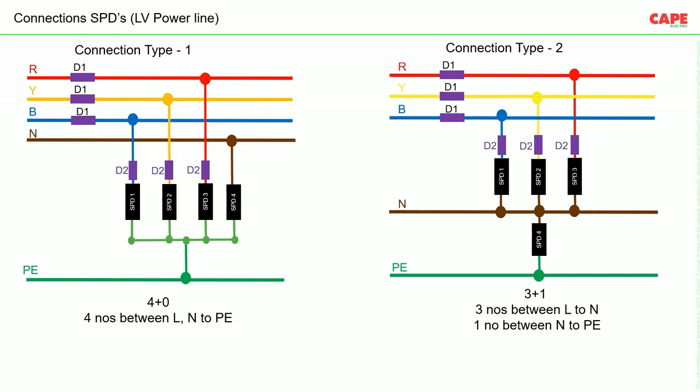There are two types of connections: type 1 and type 2. In connection type 1, all three lines and neutral are simultaneously connected to PE. In connection type 2, all three lines are first connected to neutral, and then neutral is connected through SPD4 to PE.